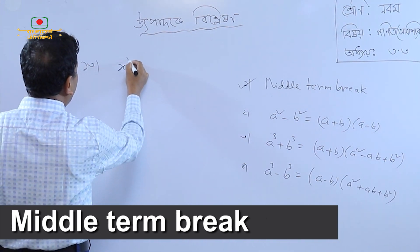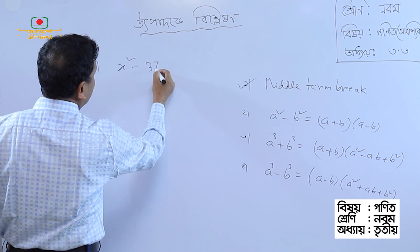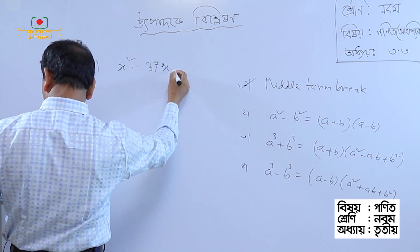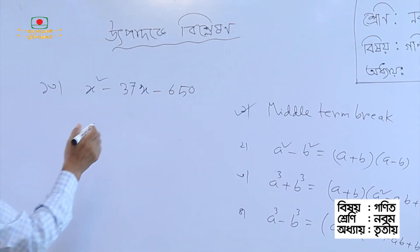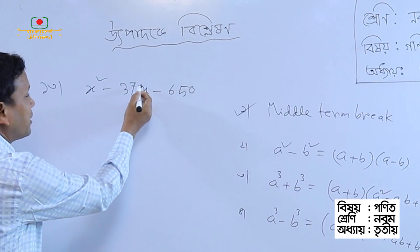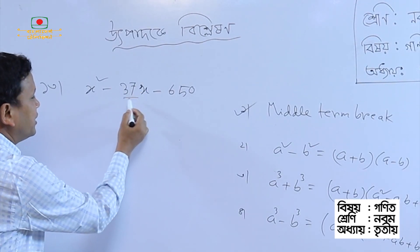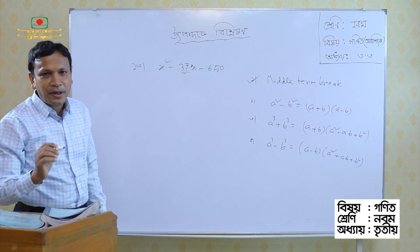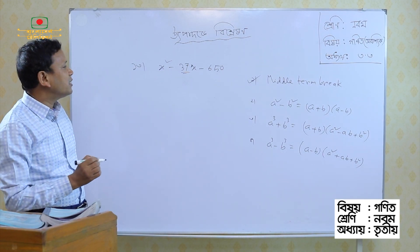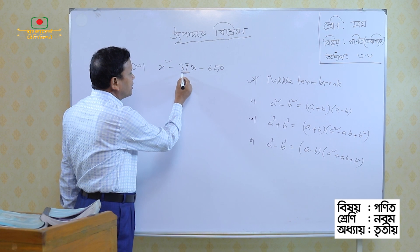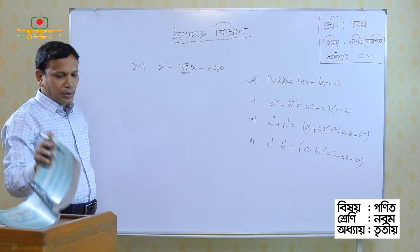x² minus 36x minus 605. Let's take a minute break, because this 3rd century is practicing to enjoy creating them, and the 3rd century refers only to these problems.